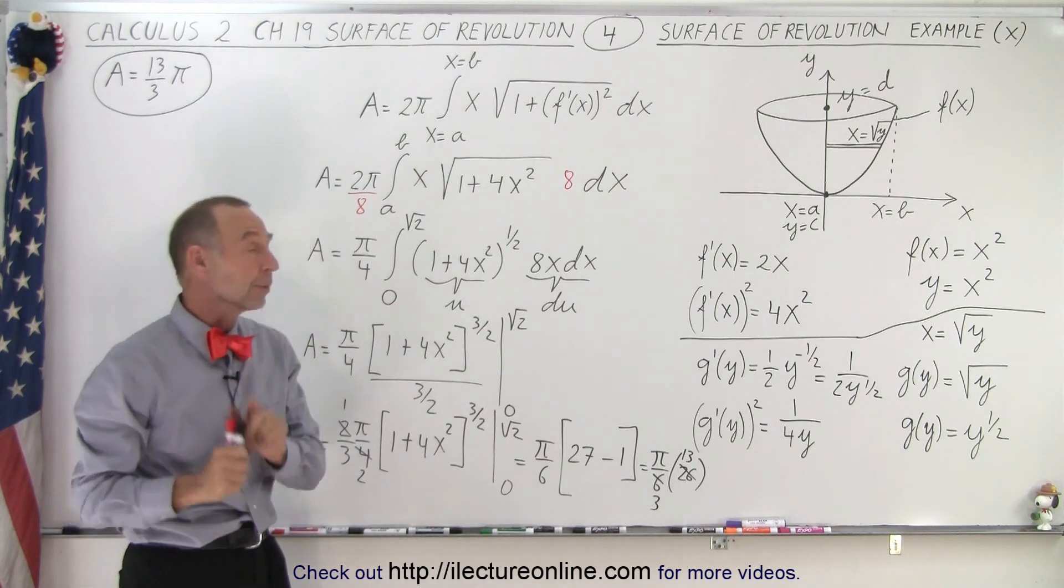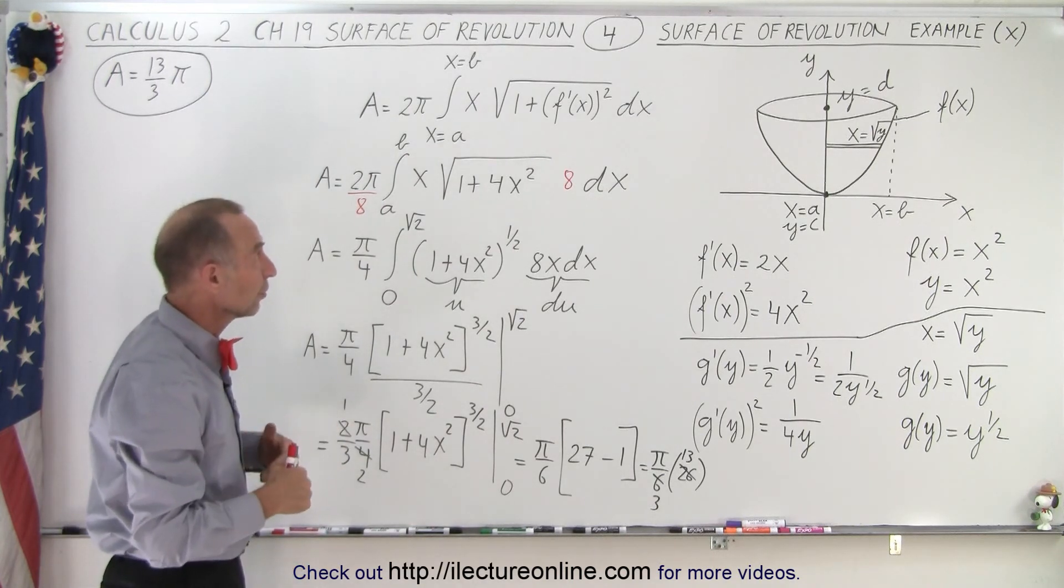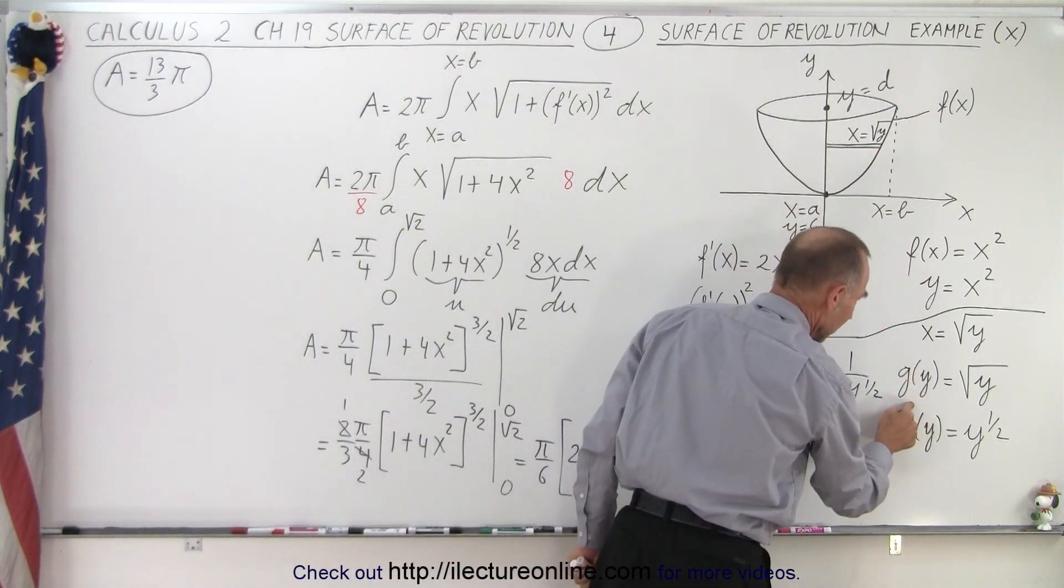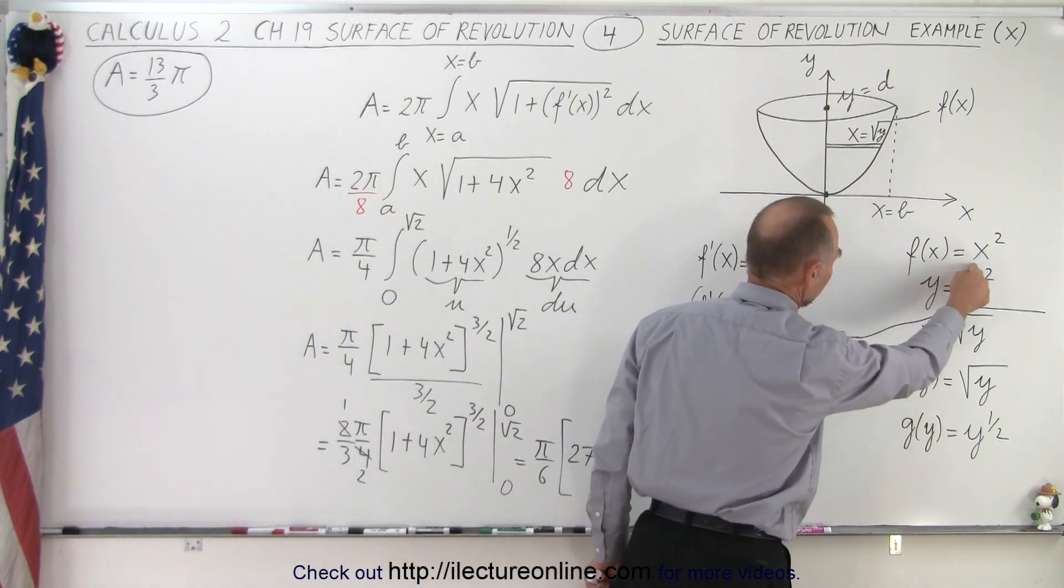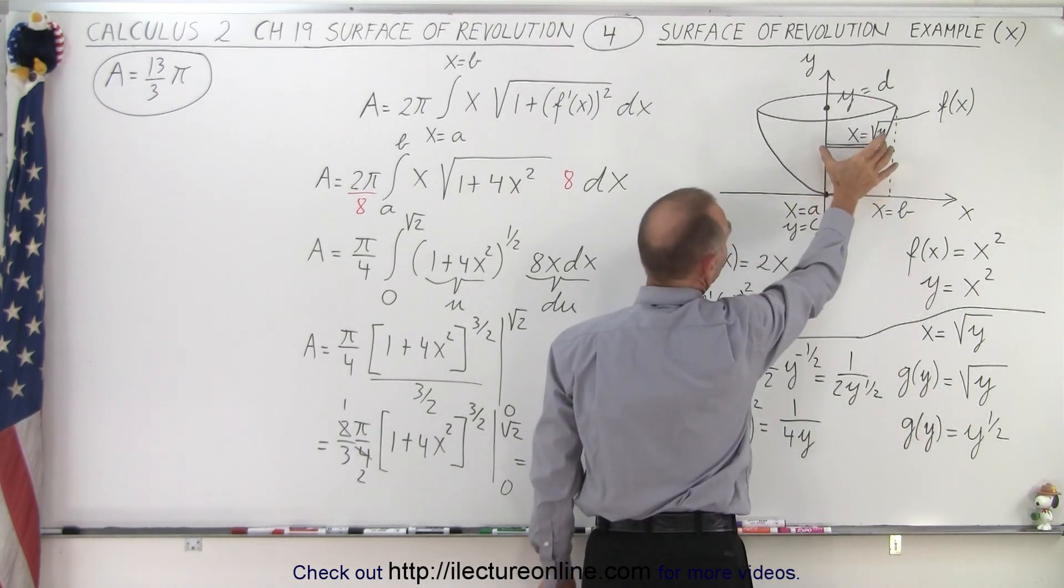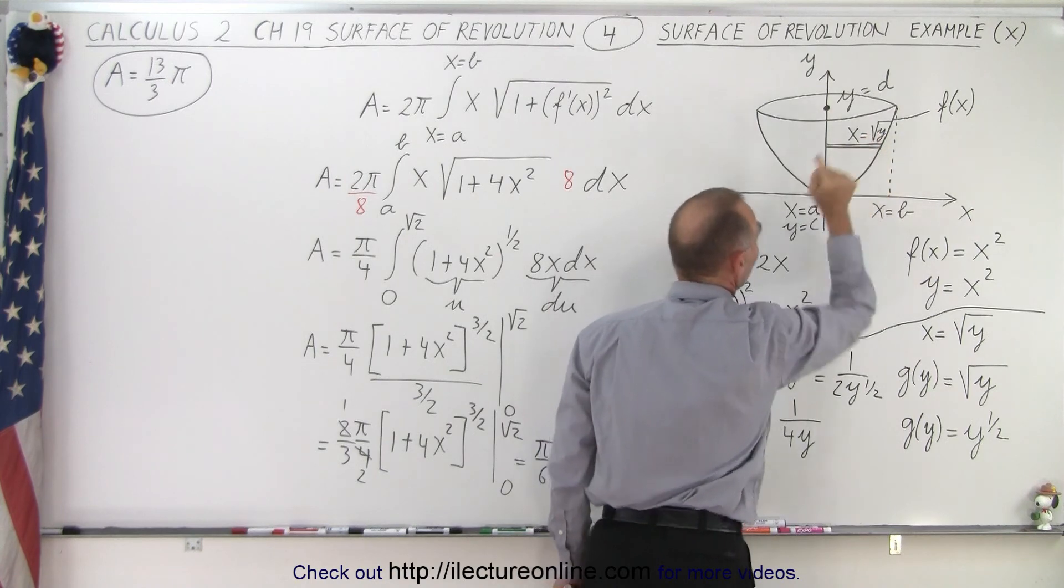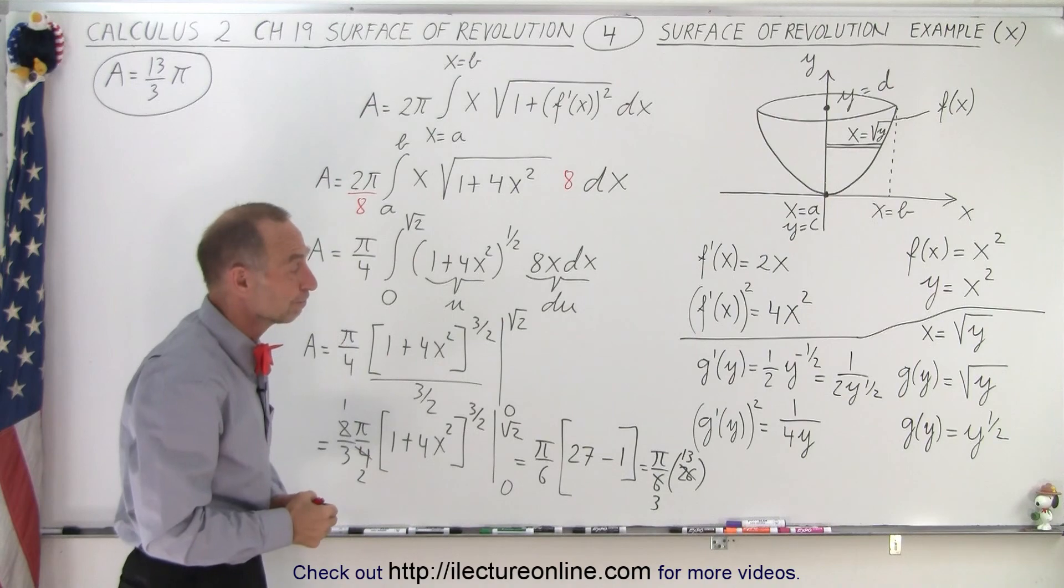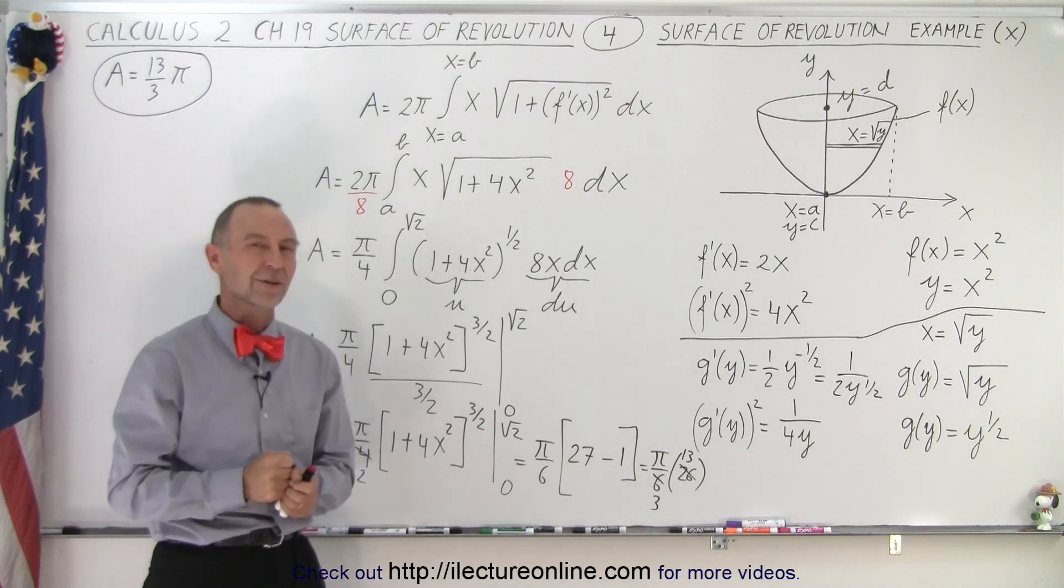So now we're going to do it the other way by using, instead of using f(x), we're now going to use g(y). And so instead of saying f(x) equals x squared, now g(y) equals the square root of y, and also realizing that this distance from here to here, instead of calling it x, we're going to call it the square root of y, and we should get the same answer. So let's try it on our next video.